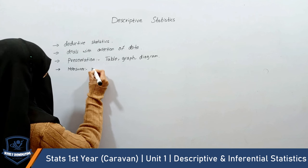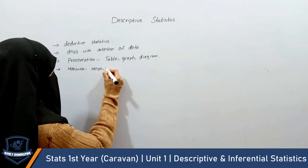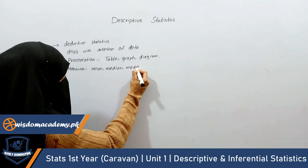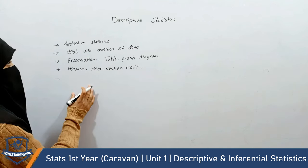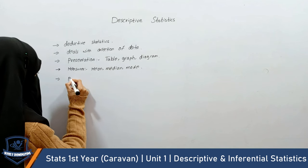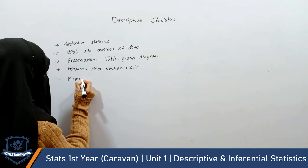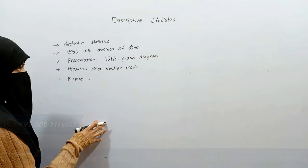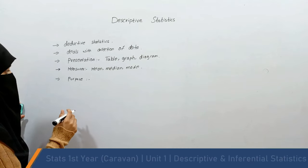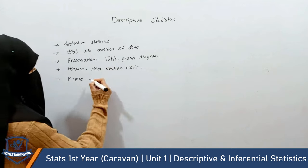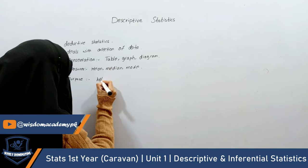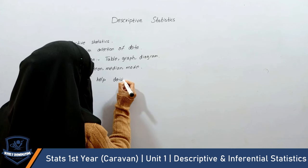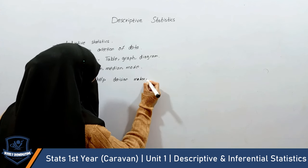Mean, median, mode — we can measure in this form. This comes from descriptive statistics. The purpose is to represent data through decision makers.